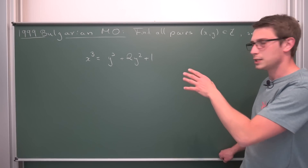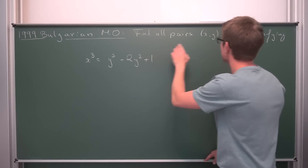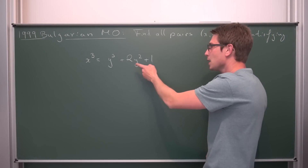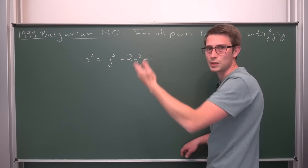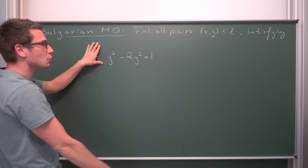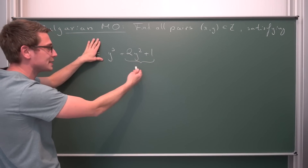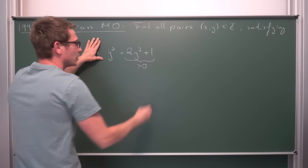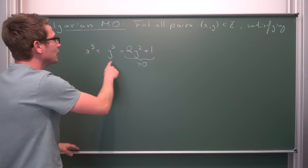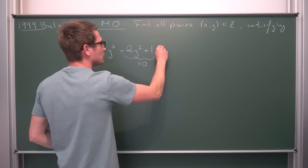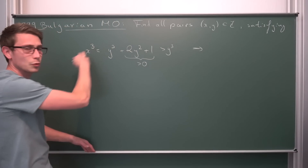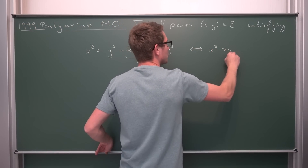So if you want to put bounds on here, let's put some inequalities in. The first thing you notice is that y squared, no matter what the input y actually is, is going to be a positive number. So 2 times a positive number is positive, plus 1 is still positive. Meaning 2y squared plus 1 is strictly greater than 0. So overall, y cubed plus 2y squared plus 1 is always going to be strictly greater than y cubed. And this gives us the restriction that x cubed is strictly greater than y cubed.